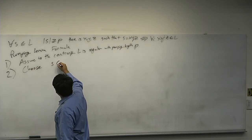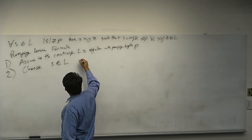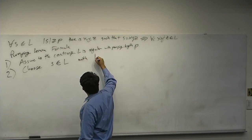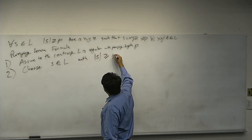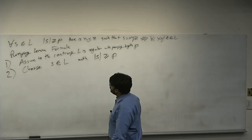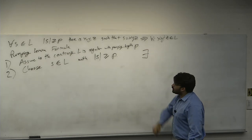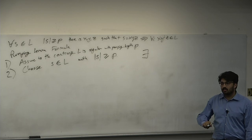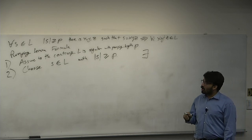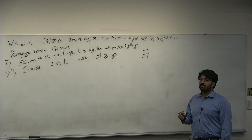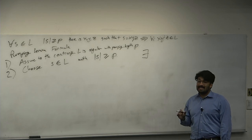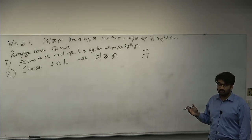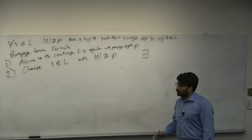Step 2: choose S which is an element of L with the length of S being greater than or equal to P. This is an existential statement — choose one specific string in the language, longer than P. You don't know what P is; that's okay. You'll choose S as a function of P, as you'll see in the example.